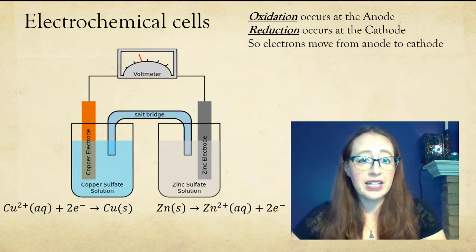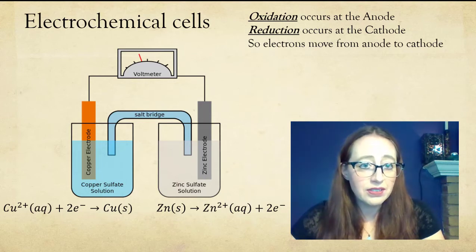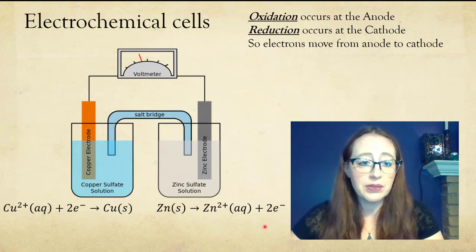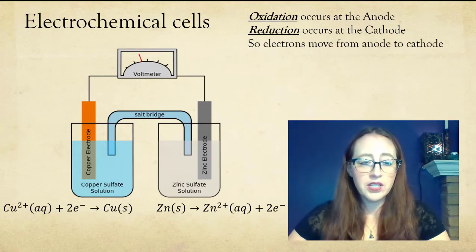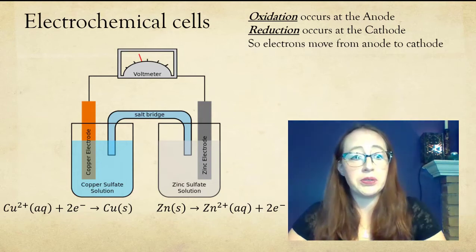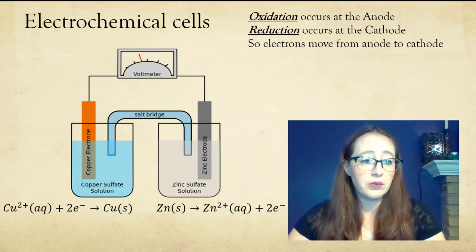So remember that our oxidation occurs at our anode. Our reduction occurs at our cathode. And so since our copper is here, that's how we knew that that was the cathode and because it's being reduced. And that's how we knew that zinc was our anode because it's being oxidized. So we'll be able to see that electrons are moving from our anode where they're produced to our cathode where they're absorbed.